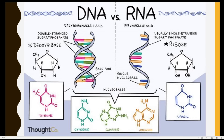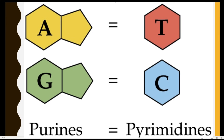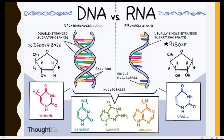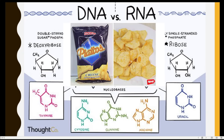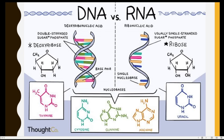Adenine and guanine are called purines, while cytosine and thymine are called pyrimidines. Nung tinuturo ko pa siya nung face-to-face, ang tawag ko dyan para maalala — yung purine, dalawang piatos; yung cytosine tsaka thymine, isang piatos lang sila. So it has something to do with the structure.